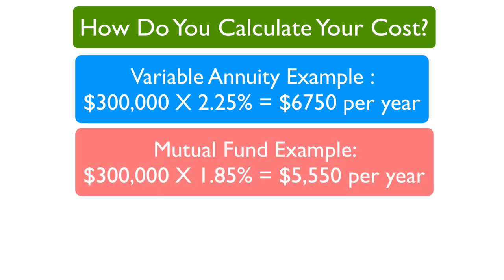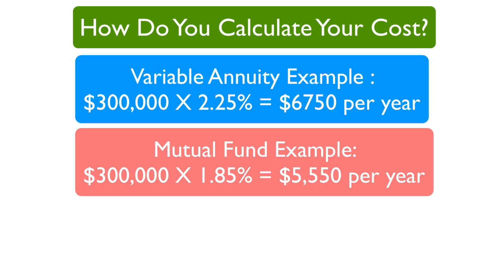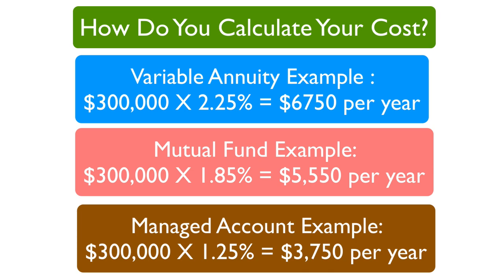For the mutual fund example, $300,000 with a 1.85% expense ratio would cost you $5,550 per year — again, not visible on your statement, just slowly reducing the value of your funds. For the managed account example, $300,000 with a 1.25% all-in cost would be $3,750 per year. With a managed account, the fees typically do show on your statement as a line item. Even though it's likely the lowest-cost option of the three, people often are surprised when they see it — meanwhile, the annuity fees are just as real, just invisible.